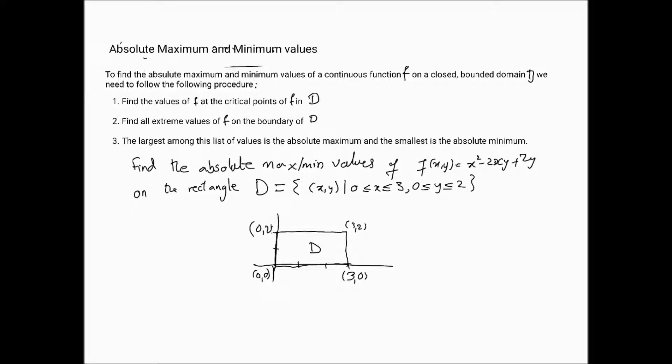Step 2 says to find all extreme values of f on the boundary of D. Step 1 gives us all possible values within D itself, and additionally we need to look at the boundaries. We divide the boundary into four obvious lines: L1 from (0,0) to (3,0); L2 from (3,0) to (3,2); L3 from (3,2) to (0,2); and L4 from (0,2) to (0,0).